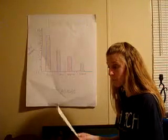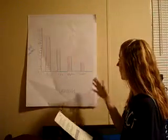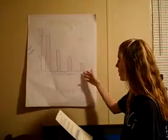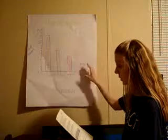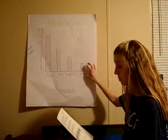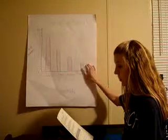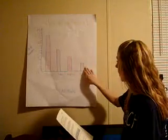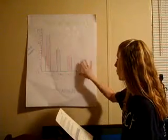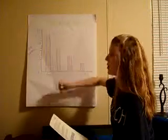Which animal did the least number of students choose as their favorite? We can just quickly look and see that horses had only three because this is the smallest bar. It only represents three, whereas the dogs represent thirteen, so it's a big bar.